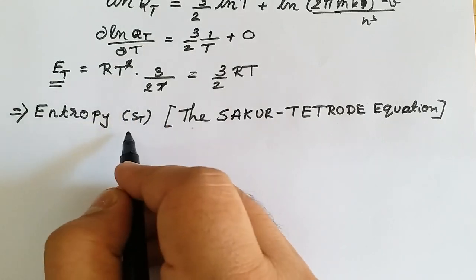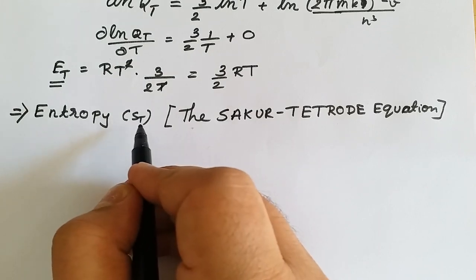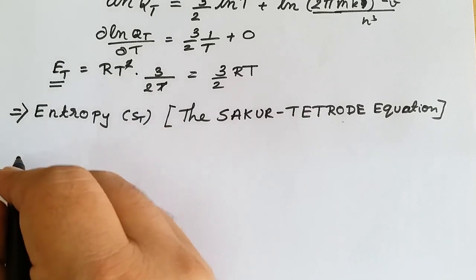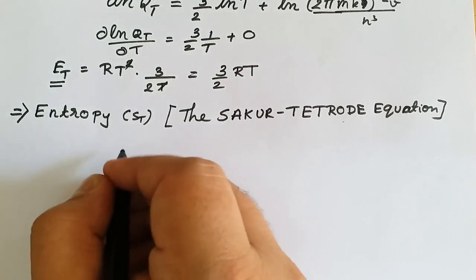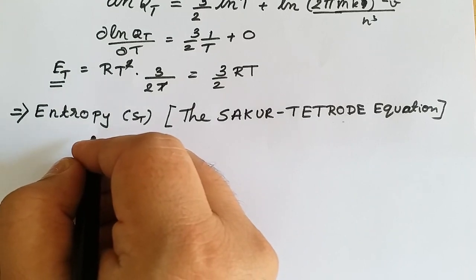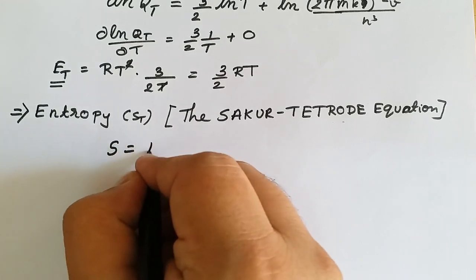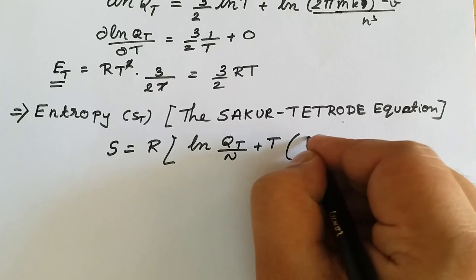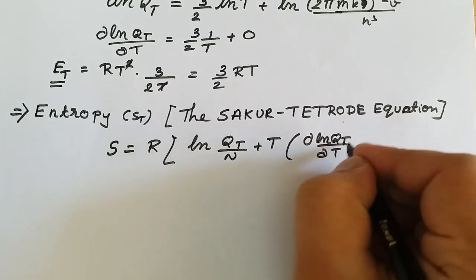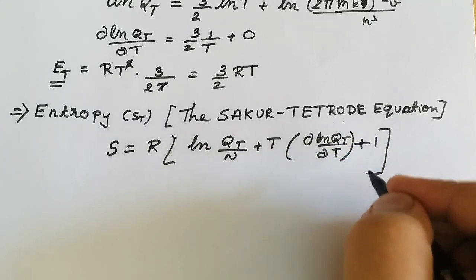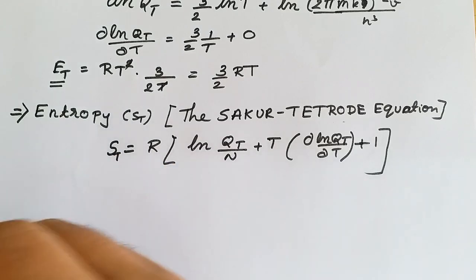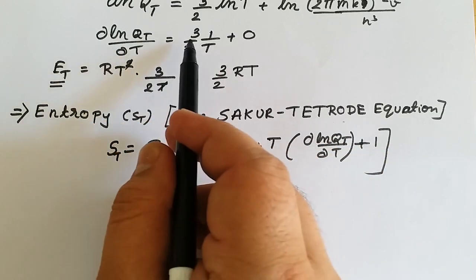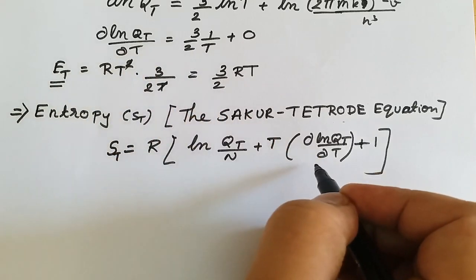Moving on to translational entropy S_t. This relation for translational entropy is also known as the Sackur-Tetrode equation. We have already derived the value of entropy in terms of partition function: S = R [ln(q_t/N) + T × d(ln q_t)/dT + 1]. The value of d(ln q_t)/dT we already found is 3/(2T), which we now substitute directly.